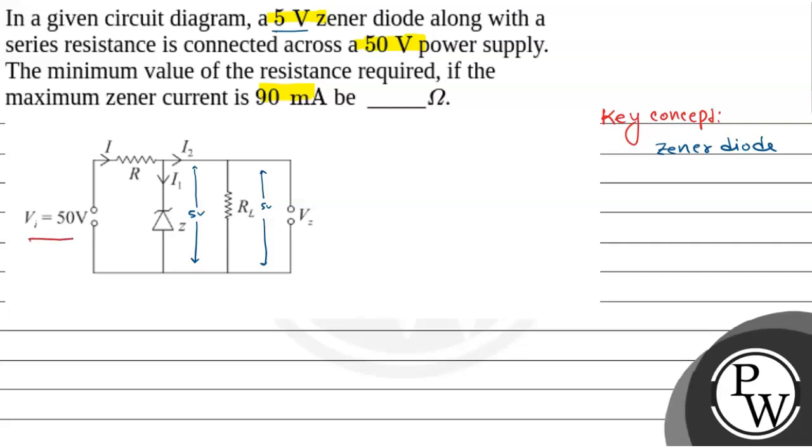And given here, V_i equals 50 volt. Now I need to find its minimum value of R, so that the maximum Zener current is 90 milliampere.